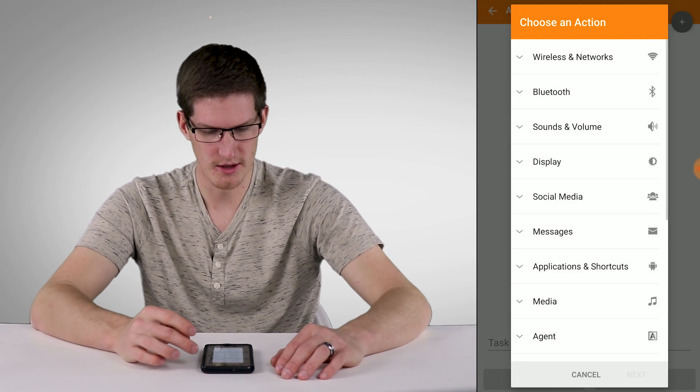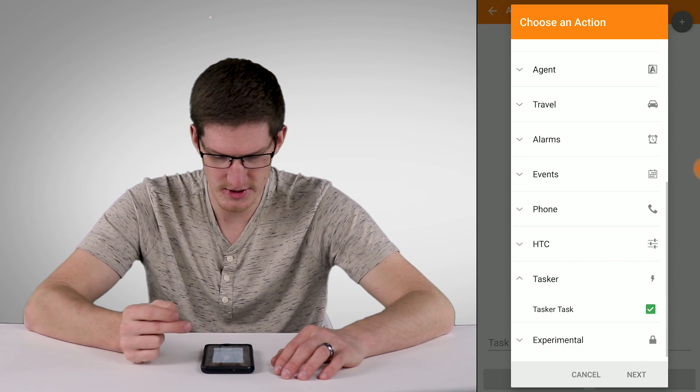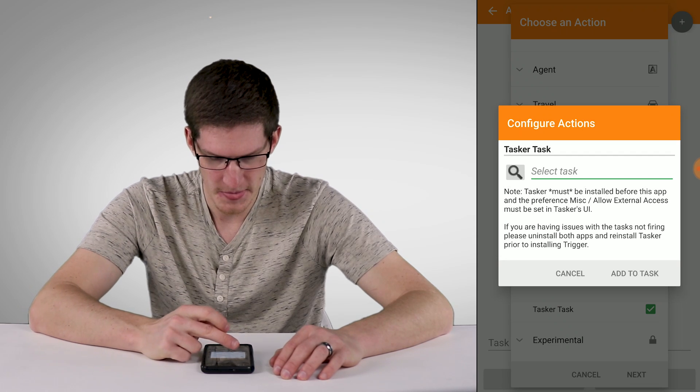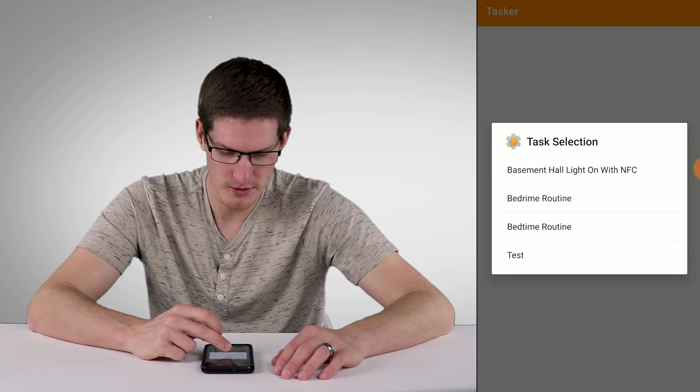And Next. And choose an action. And what we want that action to do is be a task or task. If we go ahead and toggle that, we can click the little magnifying glass and find that Bedtime Routine.